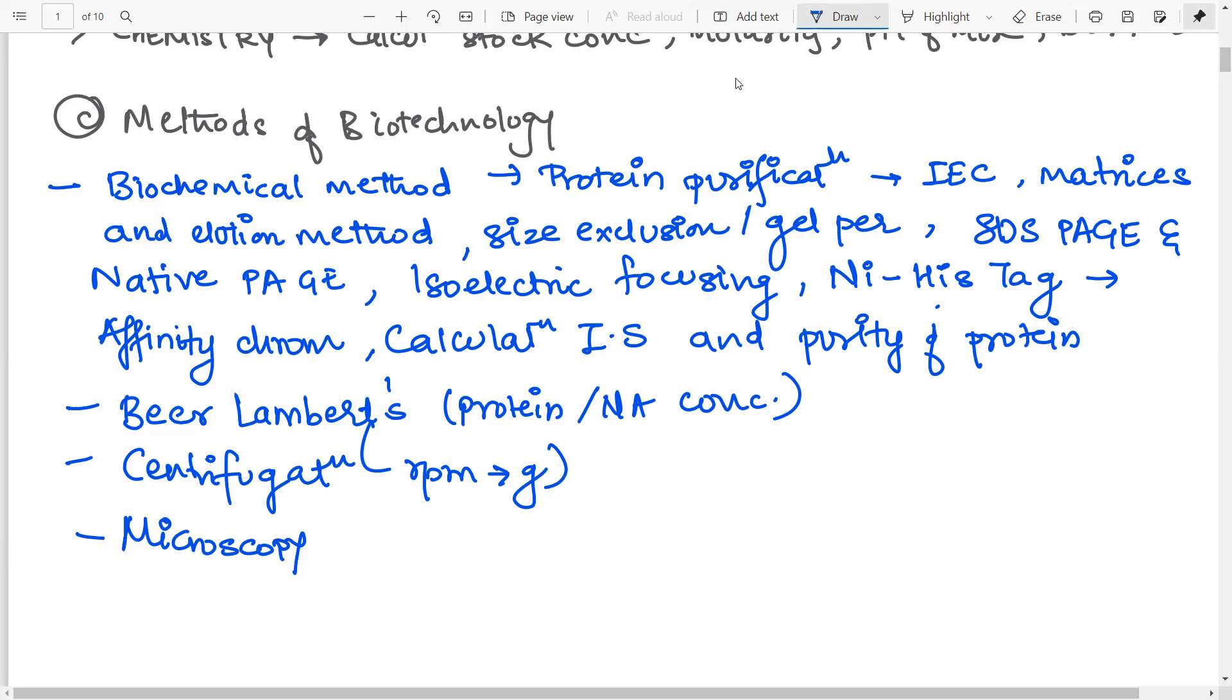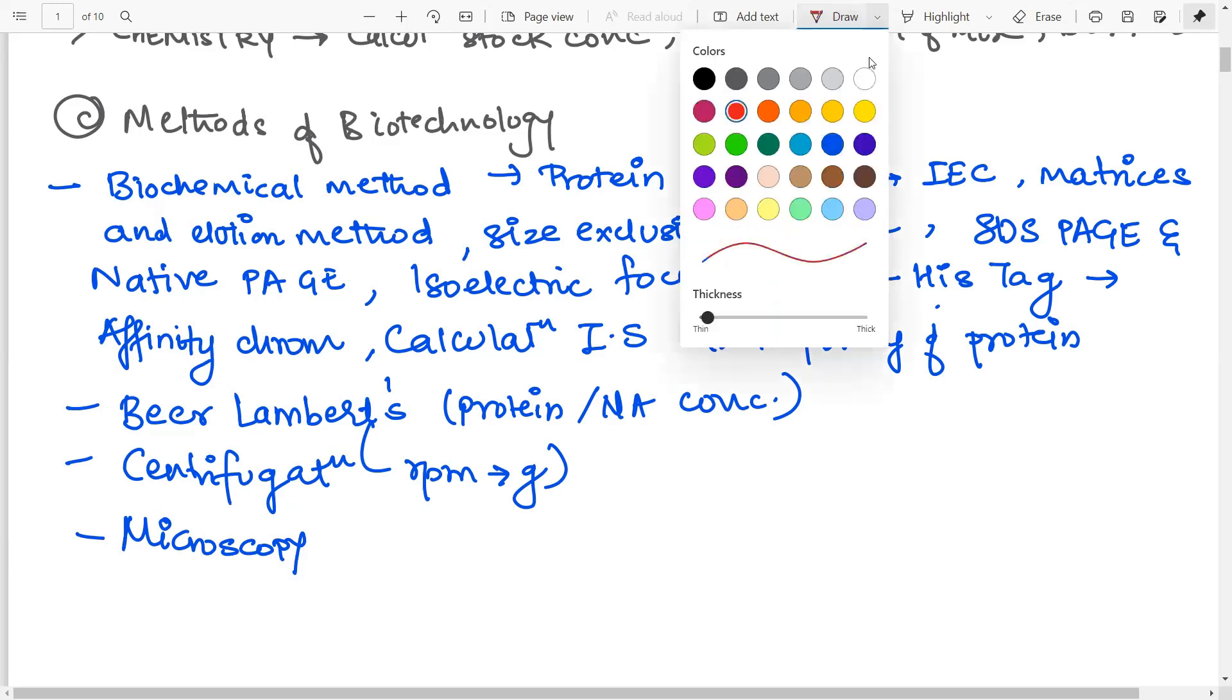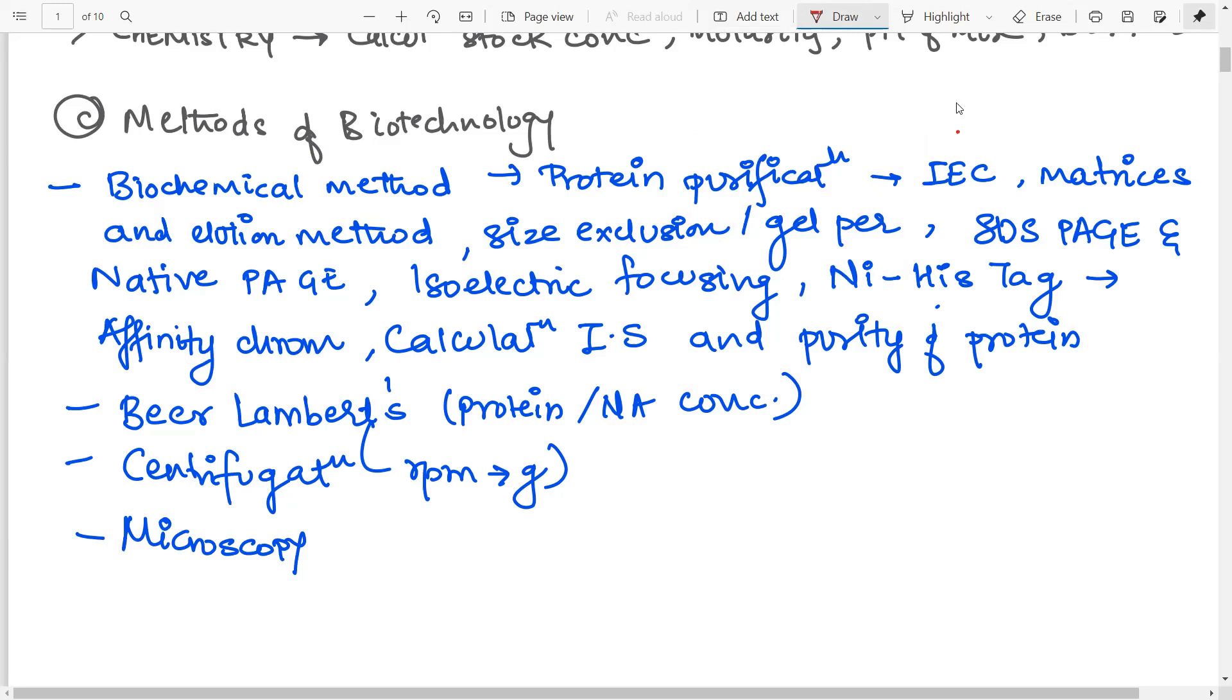Now you may have one question that, where will we find all of these methods in such a short period of time? So there is one book that gives you a very good idea about all of this and you will get the calculations for ionic strength and purity also in that book. And that is Biochemistry by Voet. So Voet and Voet is one very good book for this particular topic.